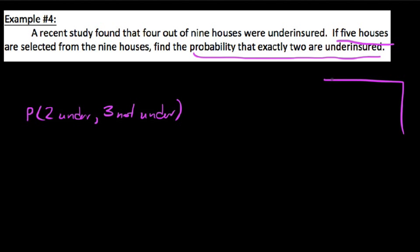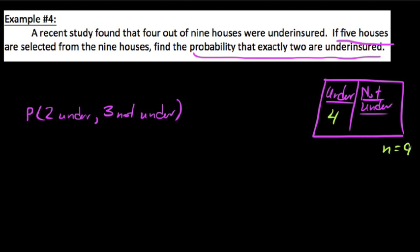So in order to do this, we'll just go ahead and draw our sample space. We know it's binomial-ish, so we could say one category is under. We care about this. And we said not underinsured. From the information given above, we know that the underinsured houses, we said in our study, four of them were underinsured, and it was four out of nine total, which means the other five must have been not underinsured.